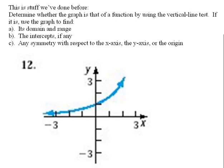Okay, now we're going to look at this example, and we're going to put everything together that we've been talking about so far. First of all, it says determine whether the graph is that of a function by using the vertical line test. If it is, then use the graph to find the following. So, before we can do anything, we need to decide whether this is a function or not.